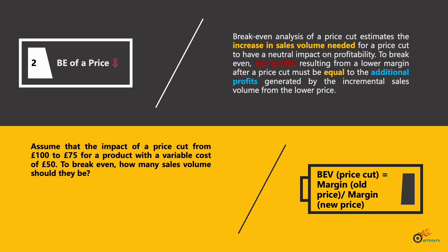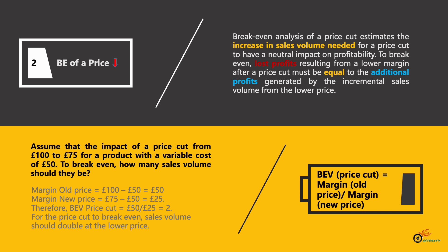For the second example, assume a price cut from 100 pounds to 75 pounds for a product with a variable cost of 50 pounds. The old margin equals 100 minus 50, which is 50. The new margin is 75 minus 50, which is 25. The break-even volume ratio is 50 divided by 25, which equals 2. This means for the price cut to break even, sales volume should double at the lower price.